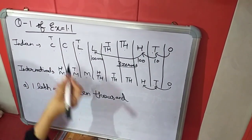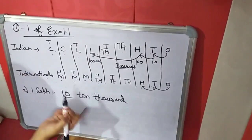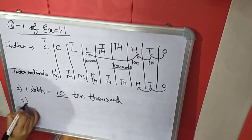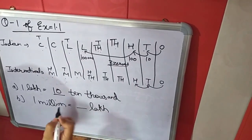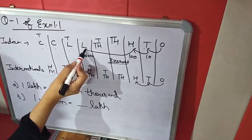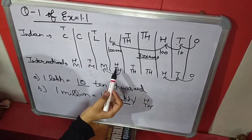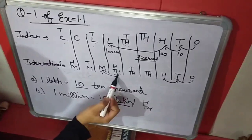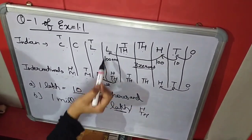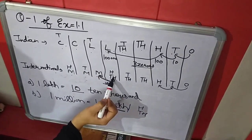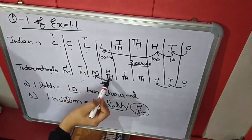In 100 million there are eight zeros, and in ten crore there are also eight zeros — they have the same values. Now another example: one million equals how many lakhs? Million is in the international system and lakh is in the Indian system. Since lakh and hundred-thousand have the same values, when we move from hundred-thousand to million we add one zero. So one million equals ten lakhs.